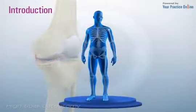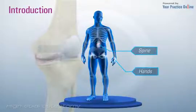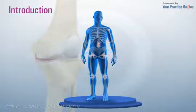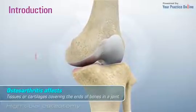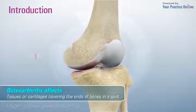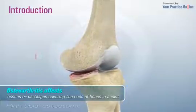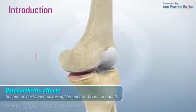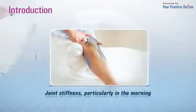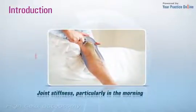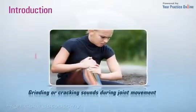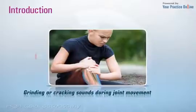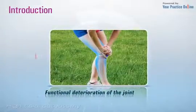OA tends to affect the commonly used joints such as hands, spine, hips, and knees. The disease affects the tissues of cartilages covering the ends of bones in a joint and leads to degeneration of the bones. Common symptoms of osteoarthritis include joint pain, joint stiffness particularly in the morning, swelling around the joint, grinding or cracking sounds during joint movement, and functional deterioration of the joint.